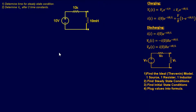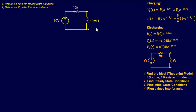We're going to start with an easy example. We're going to find the time for the steady state condition, then determine VL — the voltage at the inductor — after two time constants. Following our steps, the first is to find the ideal Thevenin model. We already started with it, so we can keep it simple: one source, one resistor, one inductor.